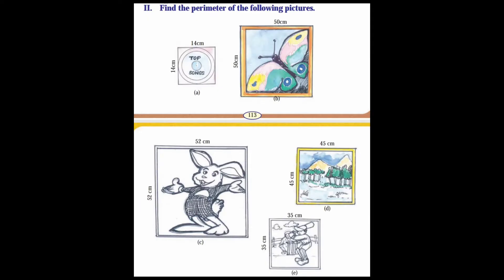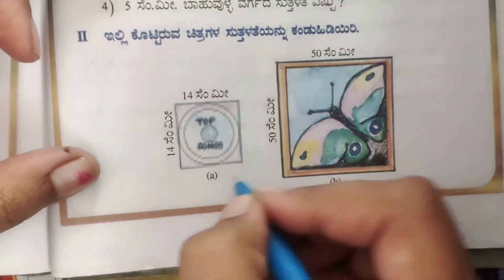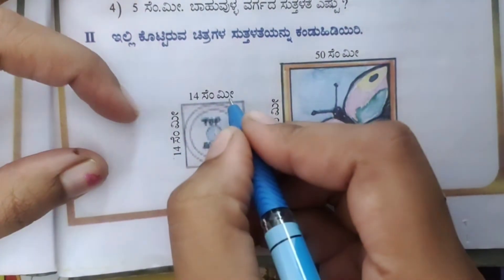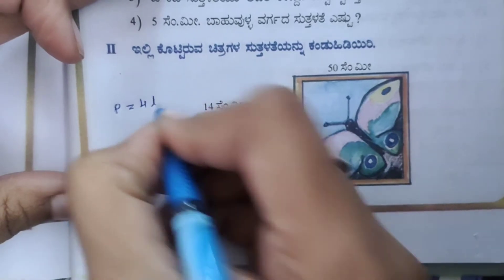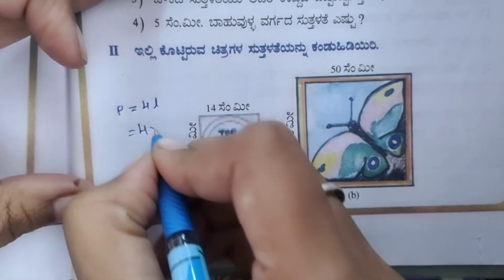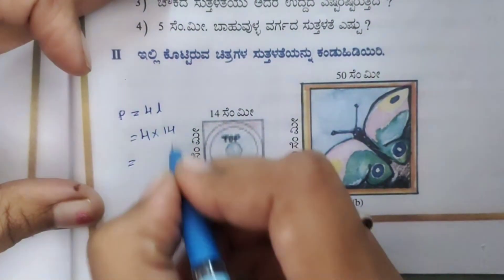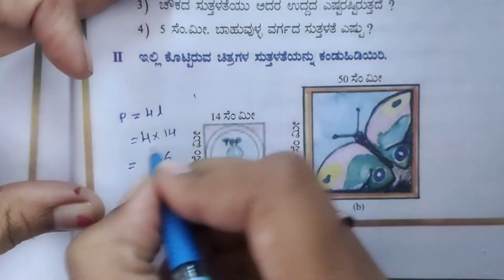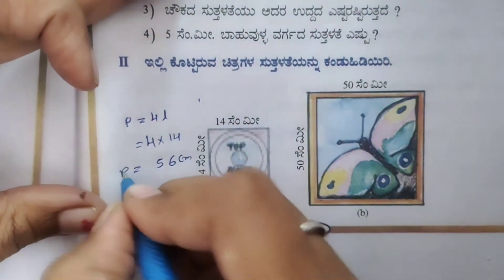Main 2: find the perimeter of the following pictures. First figure has a length of 14 centimeters. Perimeter is equal to 4 into length, that is 4 into 14. 4 fours are 16, carry 1, 4 ones are 4 plus 1 is 5, so the perimeter is 56 centimeters. Next figure: 50 centimeters. Perimeter is equal to 4 into 50. 4 zeros are 0, 4 fives are 20, so the perimeter is 200 centimeters.